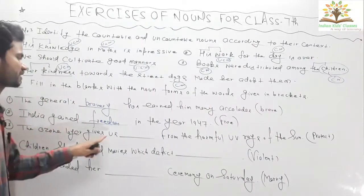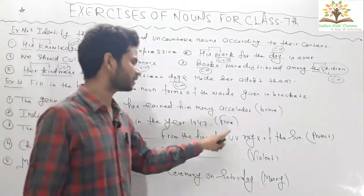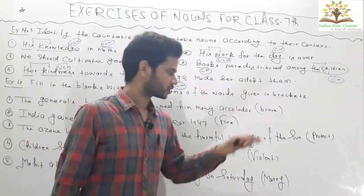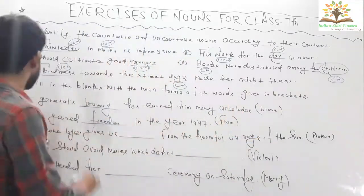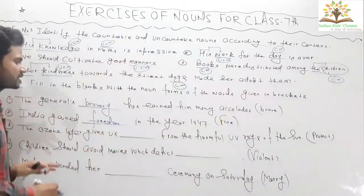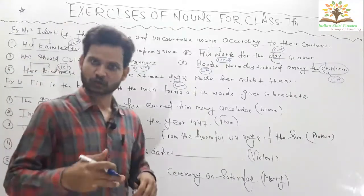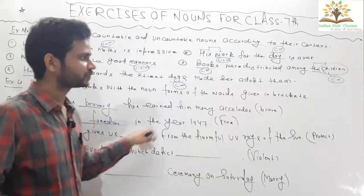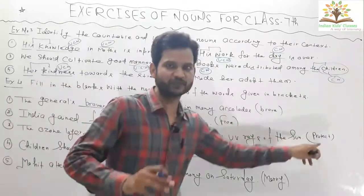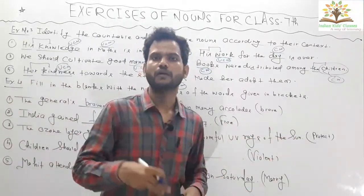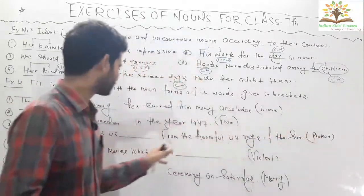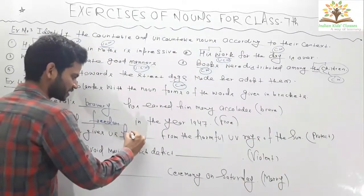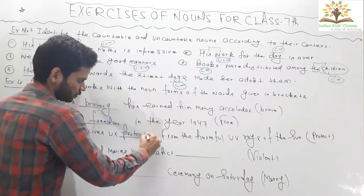Question three: 'The ozone layer gave us ___ from the harmful ultraviolet rays of the sun.' The ozone layer always protects us. We need to write not the verb but the abstract noun form. Through 'protect' we can make protection. So the answer is protection.